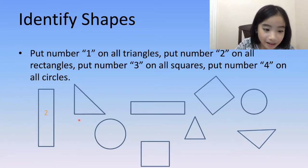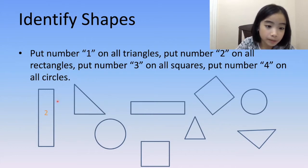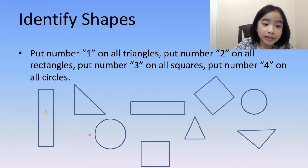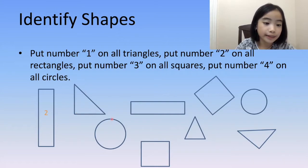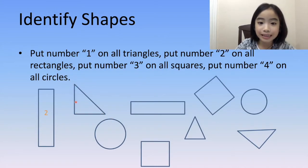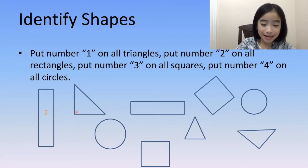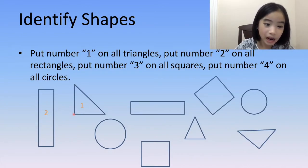Now, let's look at the shape over here. This shape has three sides and three corners, so this is a triangle. Let's put the number one on this triangle.